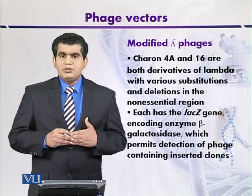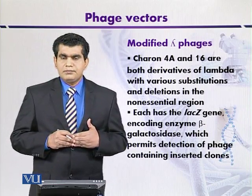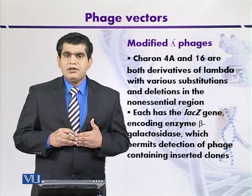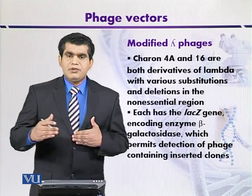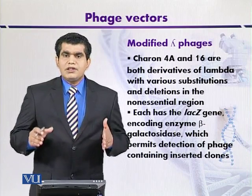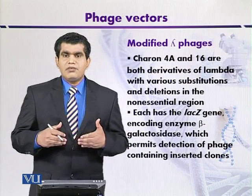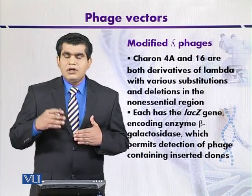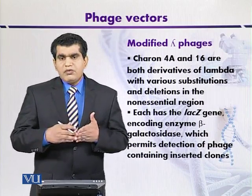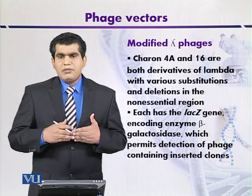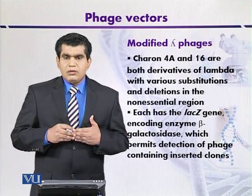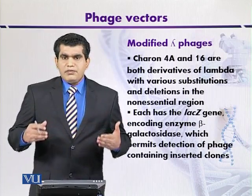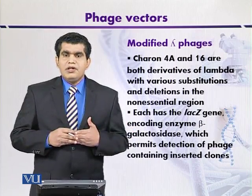Comparing Charon 4A and Charon 16: in case of Charon 4A, a fragment has been removed and foreign DNA inserted, so larger DNA fragments can be cloned. Whereas in the case of insertional vector Charon 16, we are inserting the foreign DNA without the removal of vector DNA, so only smaller DNA fragments of up to 5 kbps can be cloned. Overall, because of the presence of a reporter gene, these modified lambda phages are very effective in transforming E. coli cells.